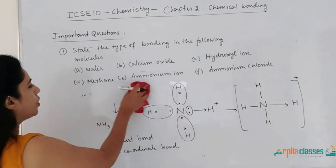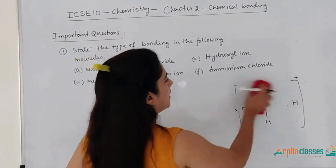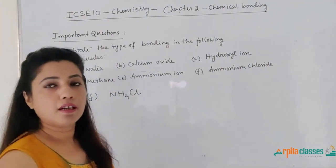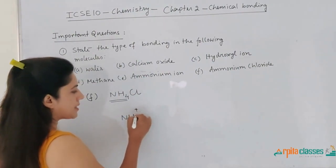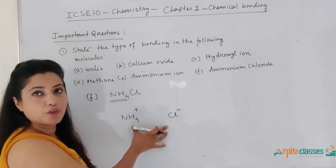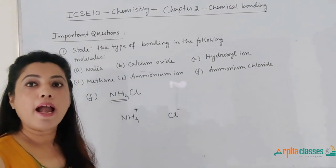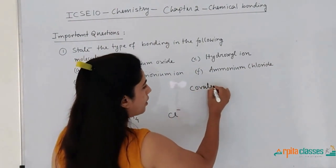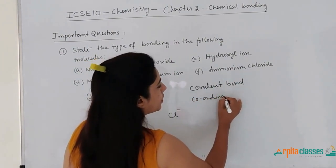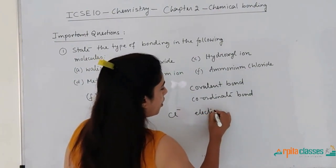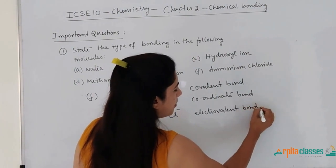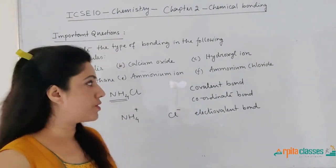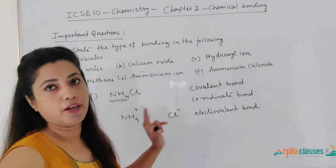The last molecule is ammonium chloride, with chemical formula NH₄Cl. Ammonium ion is NH₄⁺ and chloride ion is Cl⁻, so there will definitely be an electrovalent bond between them. Within the ammonium ion, there are covalent bonds and a coordinate bond. So in ammonium chloride, there are covalent bonds, a coordinate bond, and an electrovalent bond. This molecule is the answer to: name a compound which has all three types of bonds present in it.